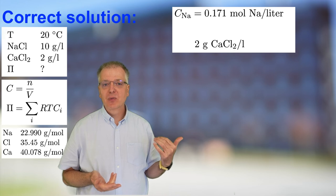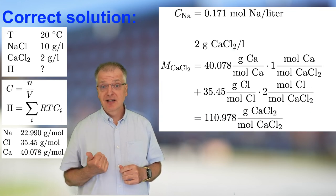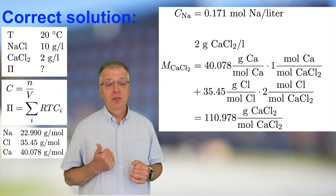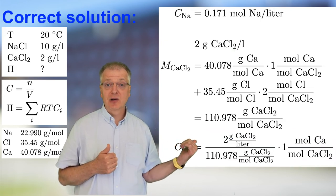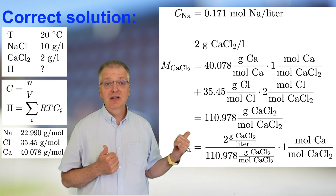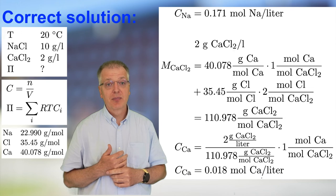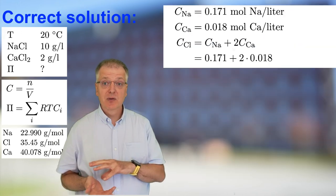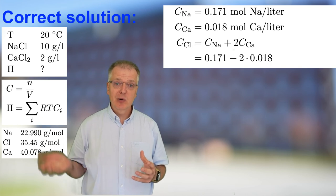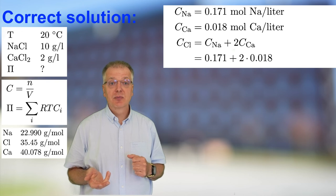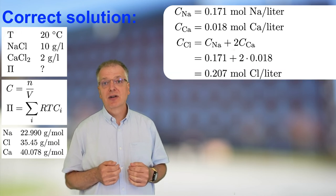Similarly, with calcium chloride, the molar weight is 40.078 times 1 plus 35.45 times 2, equals 110.978 gram of calcium chloride per mole calcium chloride. Again, we have only one calcium atom, so the concentration is simply 2 gram calcium chloride divided by 110.978 gram of calcium chloride per mole of calcium chloride, which gives us 0.018 mole of calcium per liter. For each dissociated sodium chloride we get as many chloride ions as sodium ions, and for each dissociated calcium chloride we get double as many chloride ions as calcium ions. Thus the chloride concentration becomes 0.171 plus 2 times 0.018, which gives us 0.207 mole per liter of chloride.